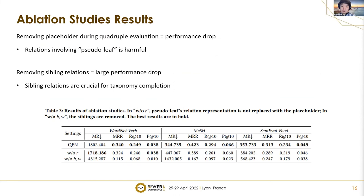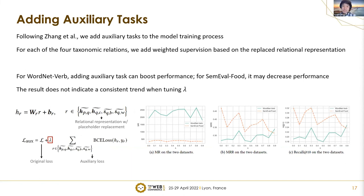We also conduct ablation studies. Removing the placeholder during quadruple evaluation results in a performance drop, confirming that relations involving pseudo-leaf are harmful. Removing the sibling relations results in a large performance drop, showing that sibling relations are crucial for taxonomy completion. We also tried adding auxiliary tasks following Zhang et al. (the TMN paper), adding weighted supervision based on the replaced relational representation with four BCE losses. For WordNet-Verb, adding auxiliary tasks can boost performance, but for SemEval Food it may decrease it, with no consistent trend when tuning lambda. Therefore, we do not use the auxiliary tasks in our main model.